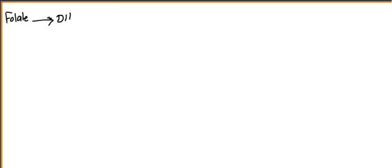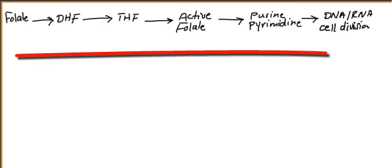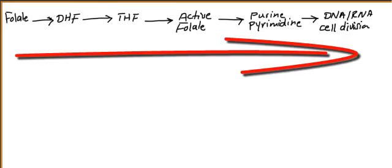Some biochemical features about folate and B12. Folate will be converted into dihydrofolate, and dihydrofolate will convert into tetrahydrofolate. From tetrahydrofolate you get active folate, which is important for purine and pyrimidine synthesis. You need purines and pyrimidines for DNA and RNA synthesis — that means cell division. This is the common pathway: folate → dihydrofolate → tetrahydrofolate → active folate → purines/pyrimidines → DNA/RNA → cell division.